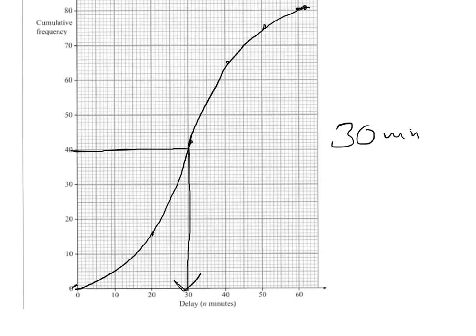I need the interquartile range, so I need the upper quartile, which comes from the 60. And you can see that's two squares before the 40, so we're looking at 38 for the upper quartile.